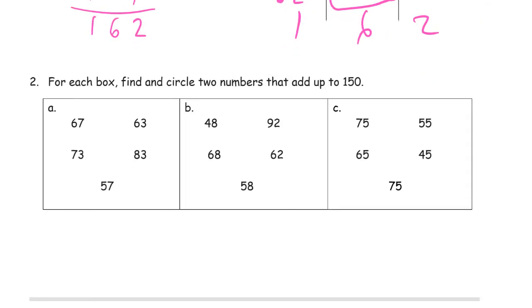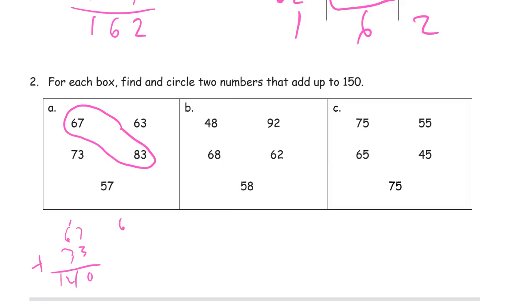For each box, find and circle two numbers that add up to one hundred fifty. We need two numbers that add up to one hundred fifty — it may take some guessing and checking. Try sixty-seven and seventy-three: that's a hundred forty, so not enough. Eighty-three is ten more and I need ten more — so sixty-seven and eighty-three. Let me check: seven plus three is ten, one plus six plus eight is fourteen — fifty — that's a hundred fifty. You've got to have proof somewhere.